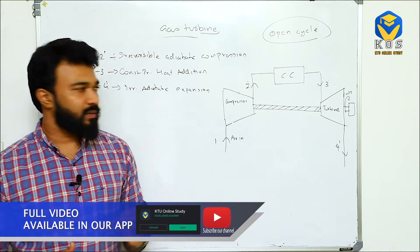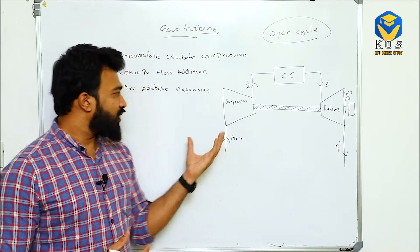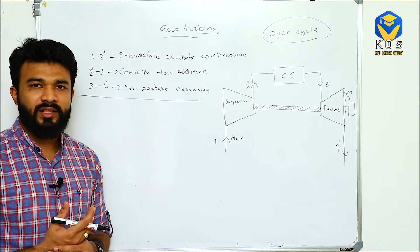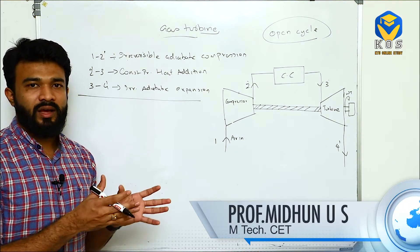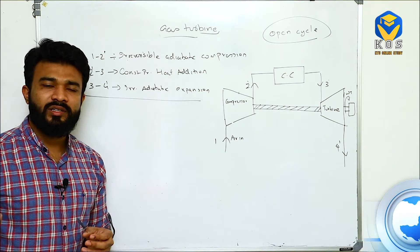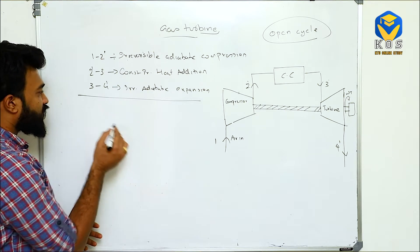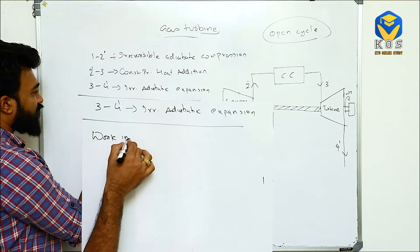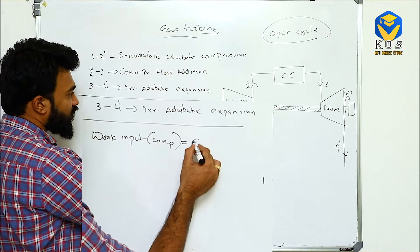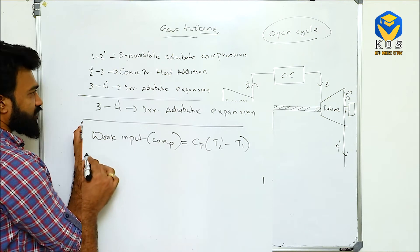We will apply the steady flow energy equation from thermodynamics. The SFEE has three terms: enthalpy change, kinetic energy change, and potential energy change. Kinetic energy and potential energy changes are negligible compared to enthalpy change, so we leave them out. The main equation: work input to the compressor equals the enthalpy difference, H2 minus H1, that is Cp into (T2' minus T1).